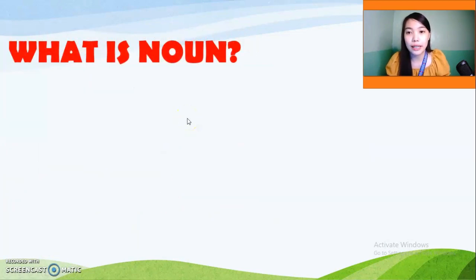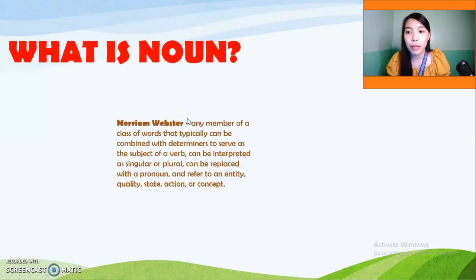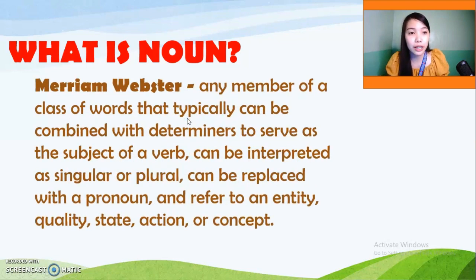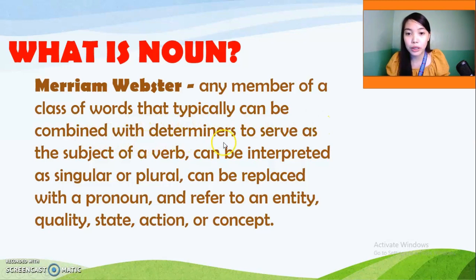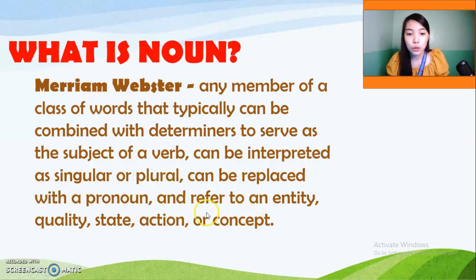Now let us define what a noun is. Basically, if you browse your dictionaries, you can get this definition: a noun is any member of a class of words that typically can be combined with determiners, to serve as the subject of a verb, can be interpreted as singular or plural, can be replaced with a pronoun, and refers to an entity, quality, state, action, or concept.